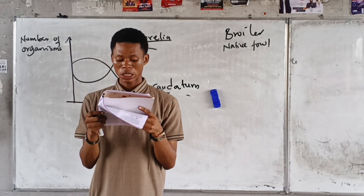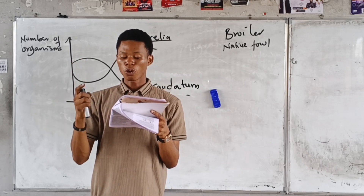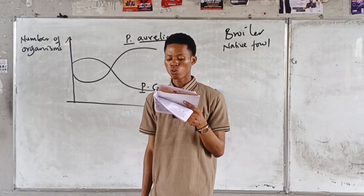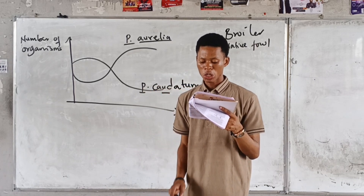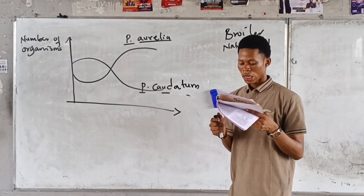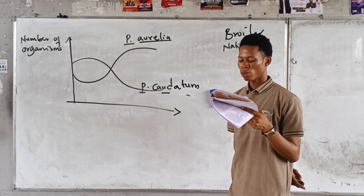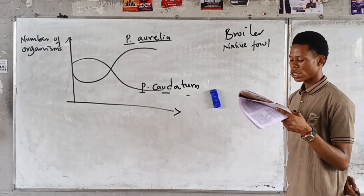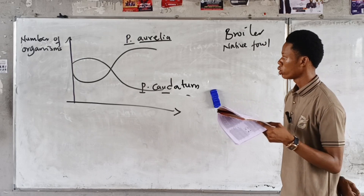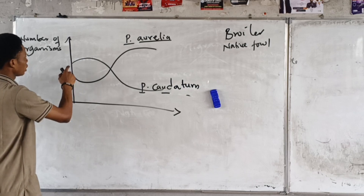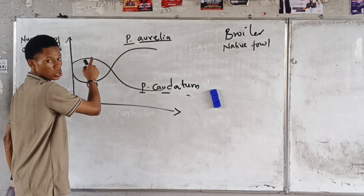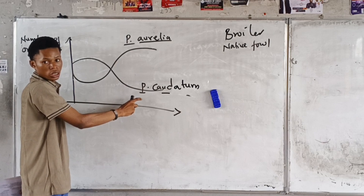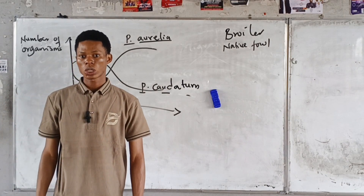The next question says: which of the following statements is true of the interaction? A. P. aurelia is better adapted for obtaining food than P. caudatum. B. P. caudatum is better adapted for obtaining food than P. aurelia. C. Both organisms cannot coexist. D. Both organisms cannot reproduce. The answer is A — P. aurelia is better adapted. Check the number of organisms: one population is increasing while the other is decreasing, so the increasing one is better adapted.